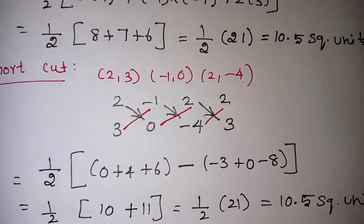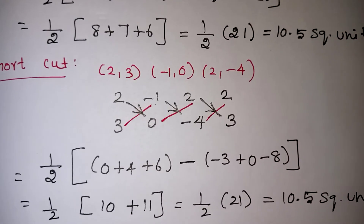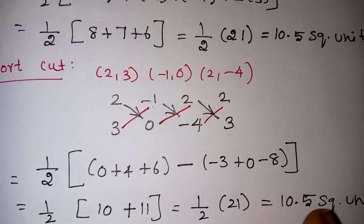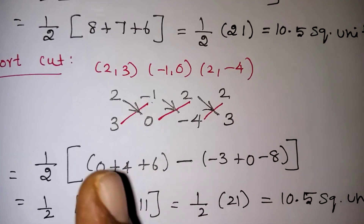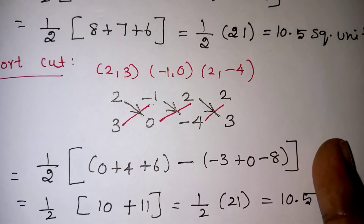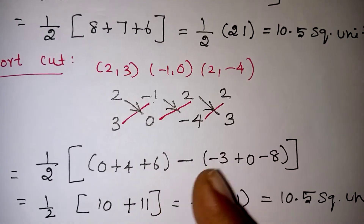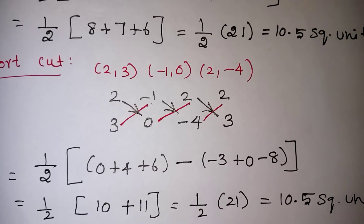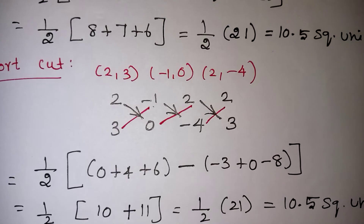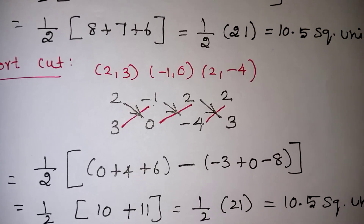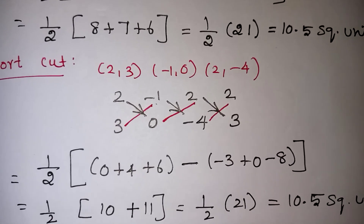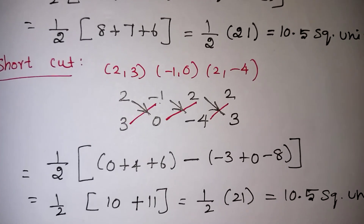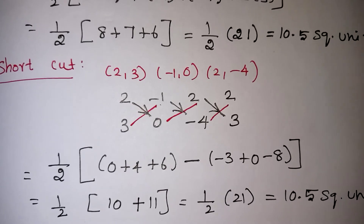Both methods give 10.5 square units. The shortcut method is easier than the formula method. In your exam, just write the formula and apply the shortcut method to find the value very easily — especially when running out of time. Thank you for watching. If you like our video, please subscribe to our channel for more videos.